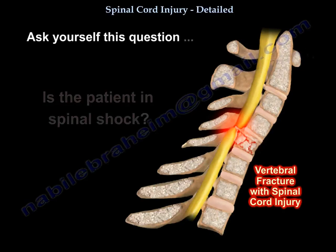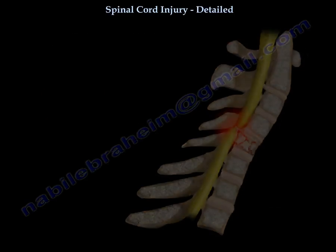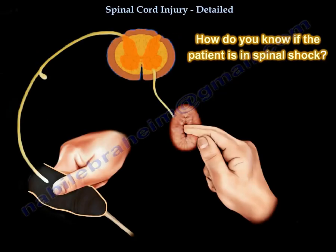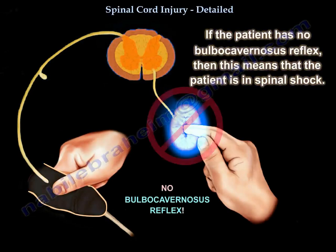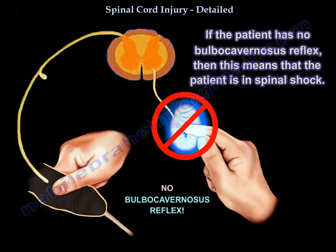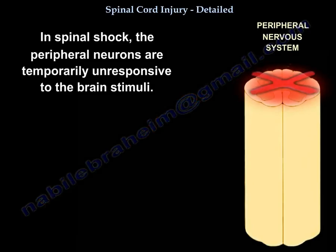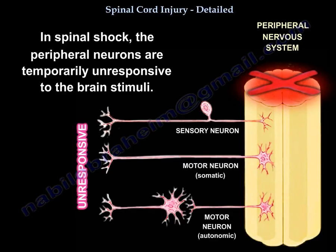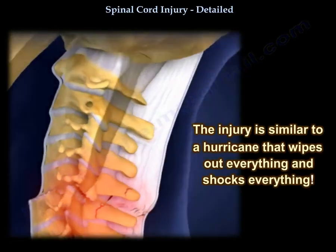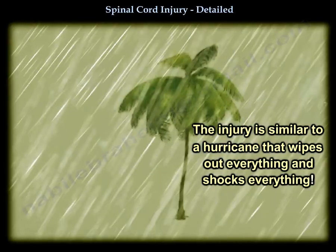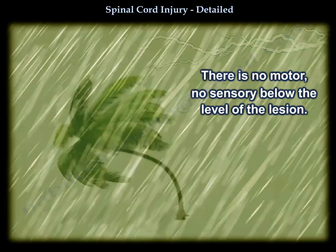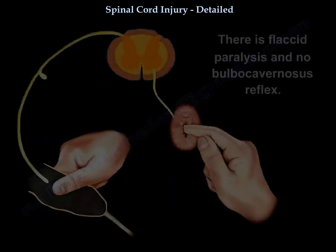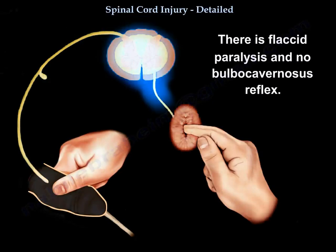You ask yourself: is the patient in spinal shock? How do you know that? You check the bulbocavernosus reflex - it is S3. If you have no bulbocavernosus reflex, that means the patient is in spinal shock. In spinal shock, the peripheral neurons are temporarily unresponsive to the brain stimuli. The injury is like a hurricane that wiped out everything. There is no motor, no sensory below the level of the lesion.